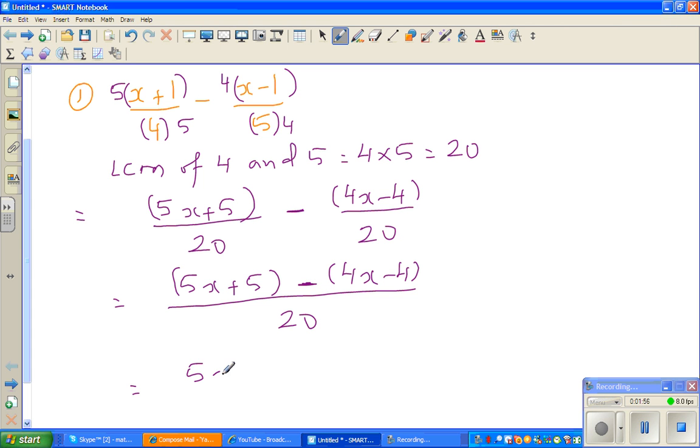So this is 5x plus 5. When you open this bracket, plus 4x will become minus 4x. And this is where you can go wrong. This negative 4 will become plus 4. That means you are multiplying, you are opening, in fact you are multiplying with negative 1. So, logically, if plus 4x becomes minus 4x, negative 4 will become positive 4 over 20.